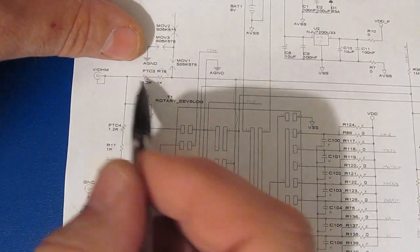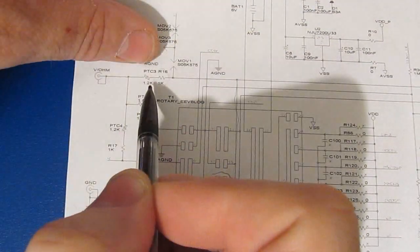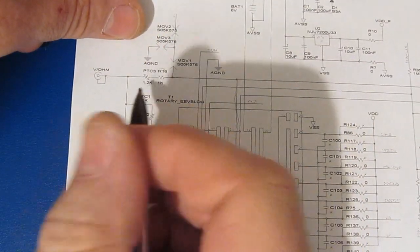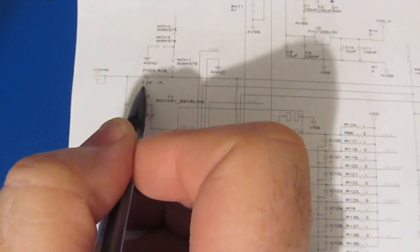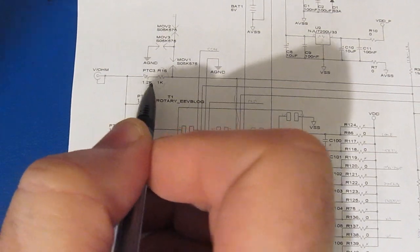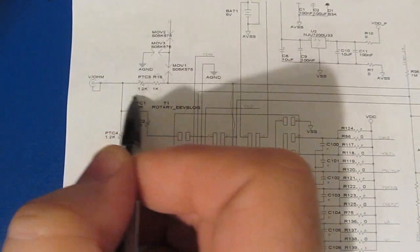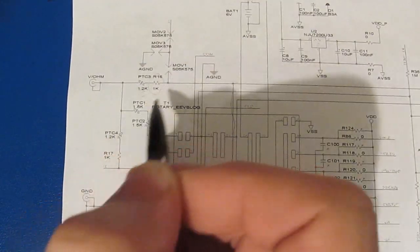The PTC's resistance is obviously going to change with current. Eventually this part would build some heat and the resistance would go up, and that's going to limit the amount of current. But as long as this part is cold, it's basically going to be a 1.2k ohm resistor.